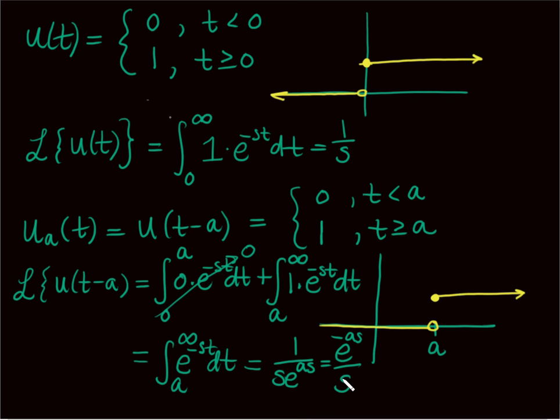A lot of times where we get these piecewise discontinuities is in physical systems — think about if we have a spring with a mass and we're letting it go, and then something comes in and bumps that mass. We have a jump from no force to all of a sudden applying a force at some moment in time. So we have a jump discontinuity going from no external forces to applying a force at, say, time two. This shows we can still solve differential equations even if we have a jump discontinuity.